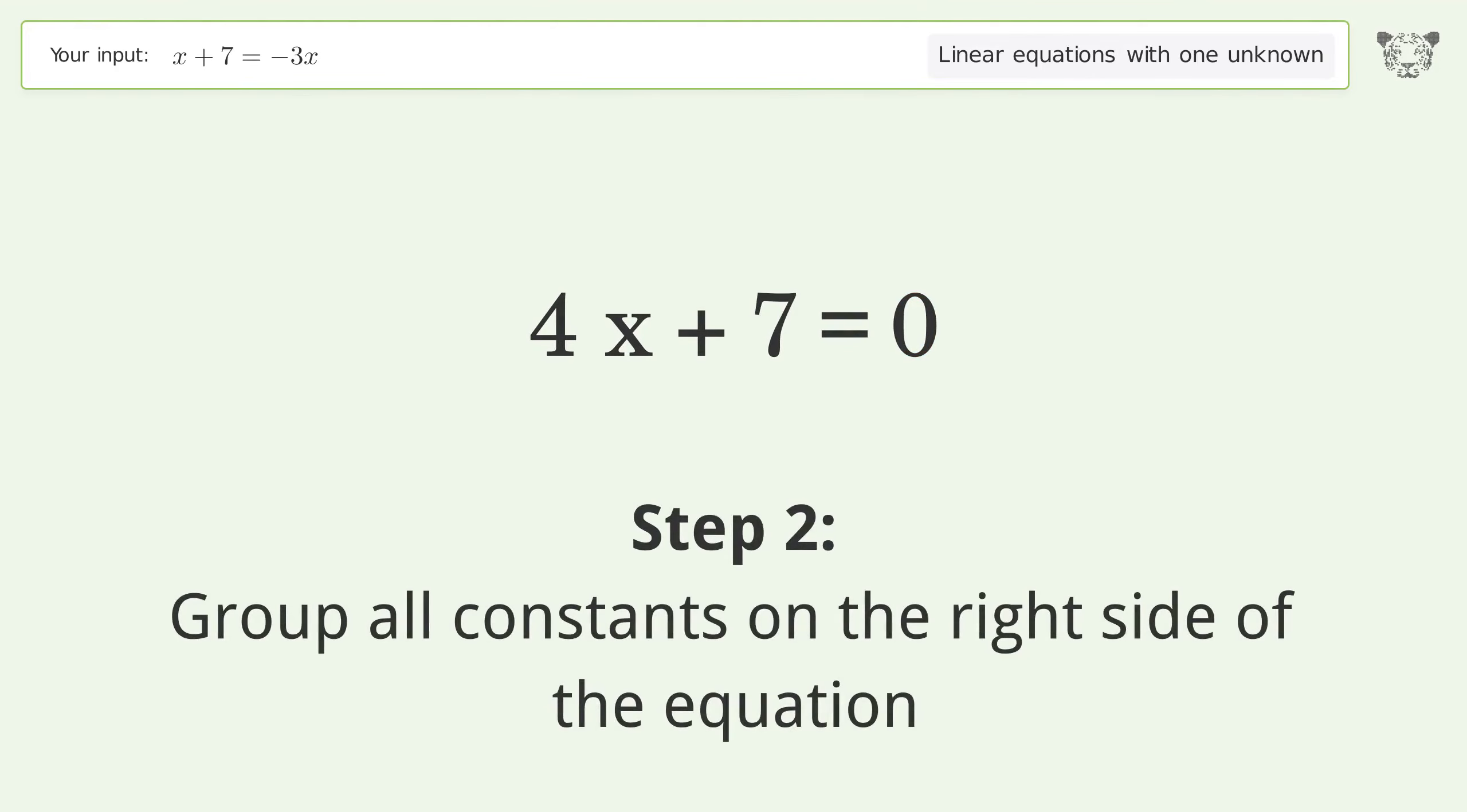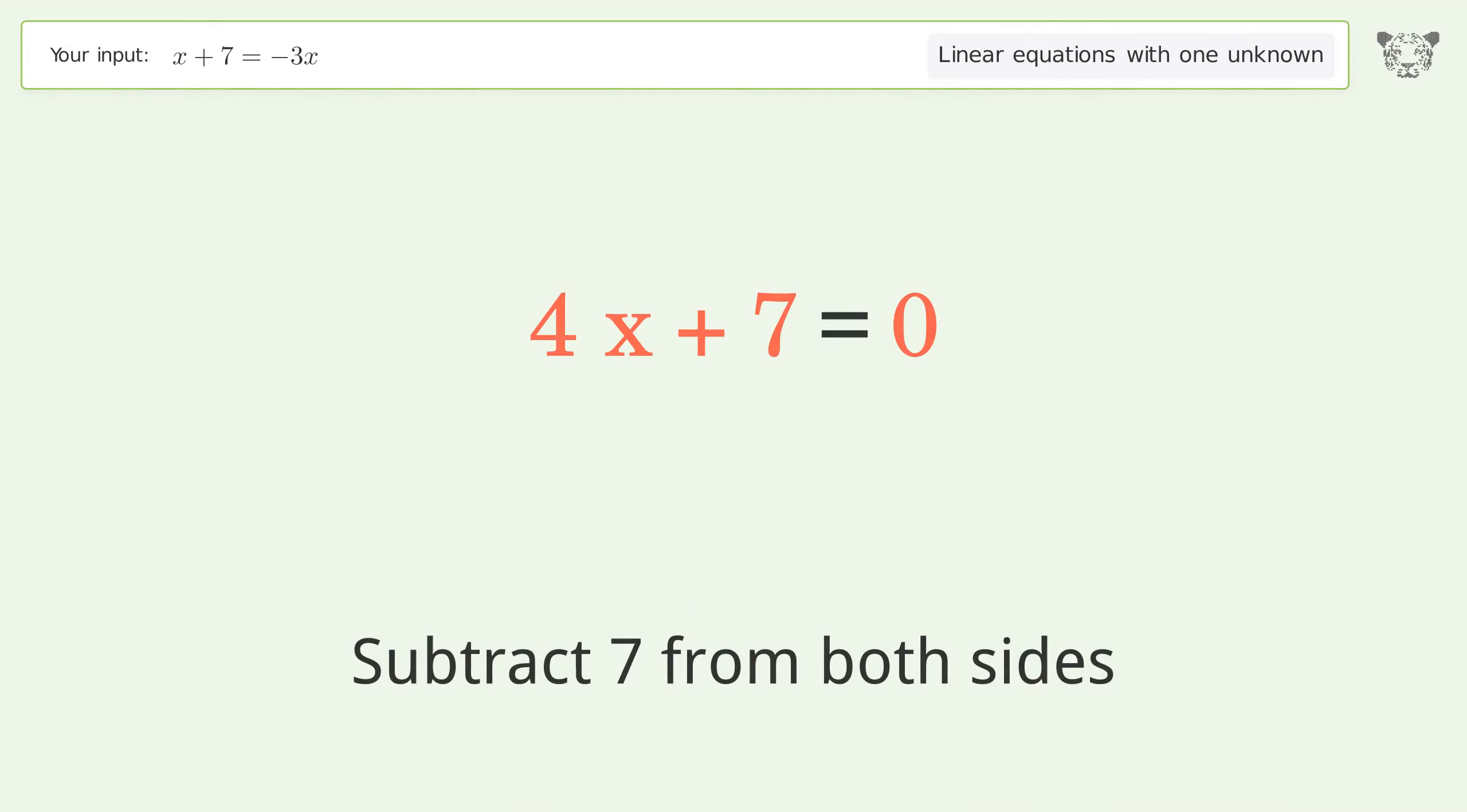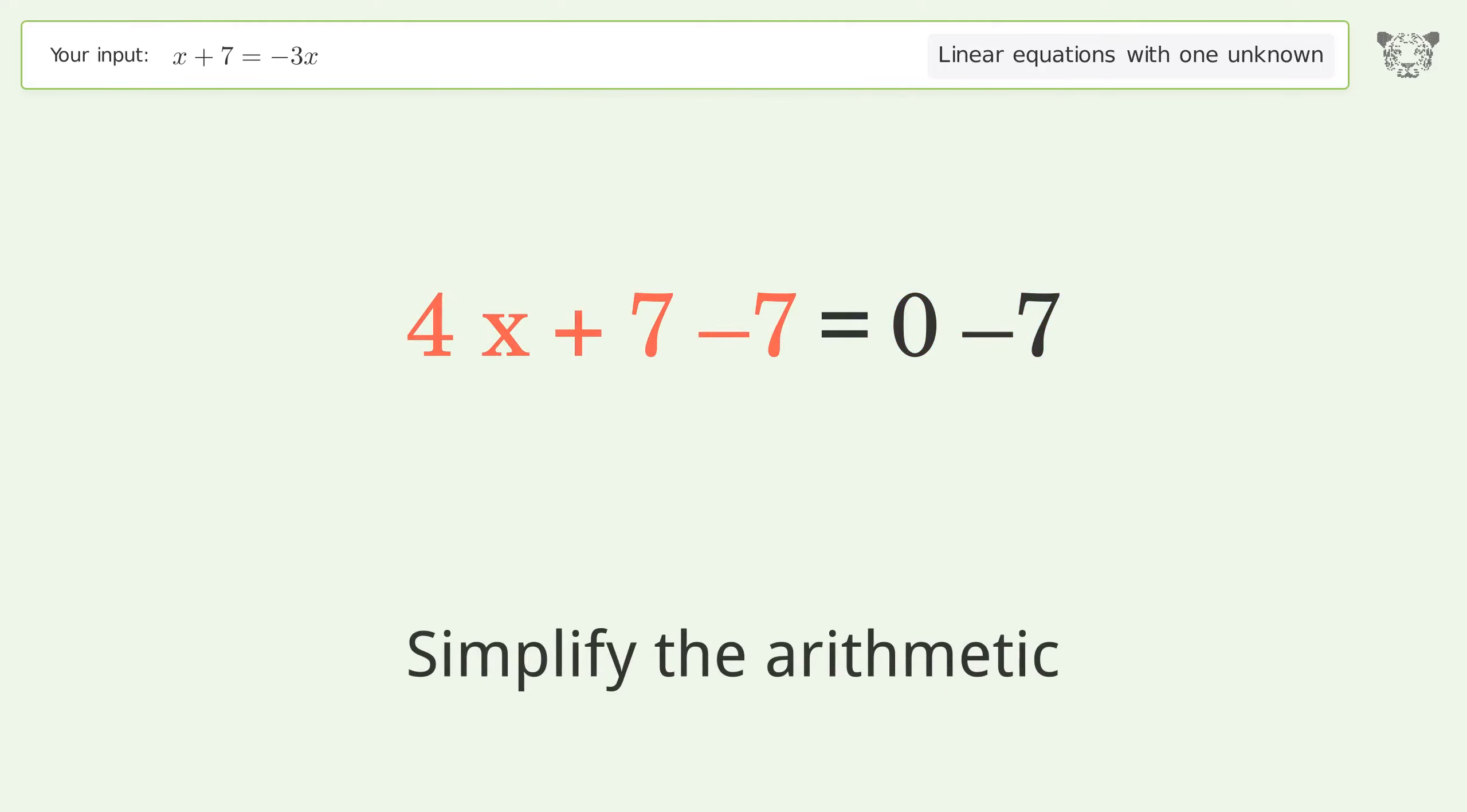Group all constants on the right side of the equation. Subtract 7 from both sides. Simplify the arithmetic.